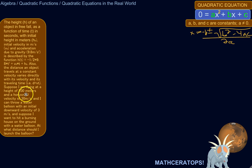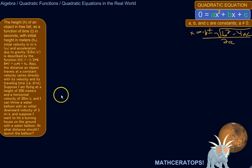Here's the problem. Suppose I'm flying at a height of 200 meters, flying at a horizontal velocity of 30 meters per second, and I can throw a water balloon with an initial downward velocity of 3 meters per second. I want to hit a burning house on the ground with a water balloon. At what distance should I launch the balloon?